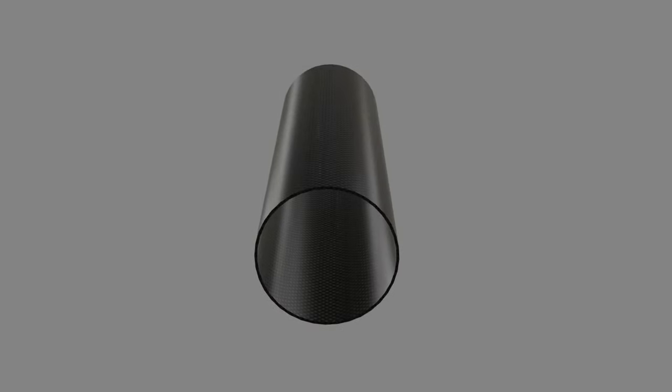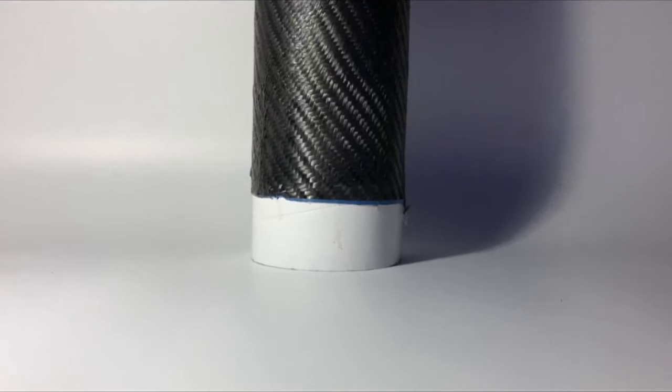Our first attempt at making a carbon fiber airframe had many problems. One of the issues we encountered was that when drying, the epoxy resin dripped down the side of the tube, therefore making it not aerodynamic.